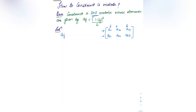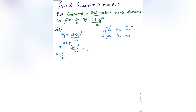The formula aij = (i − 2j)² / 2. For a11: put i=1, j=1 → (1−2)² / 2 = 1/2. For a12: put i=1, j=2 → (1−4)² / 2 = 9/2. For a13: put i=1, j=3 → (1−6)² / 2 = 25/2.